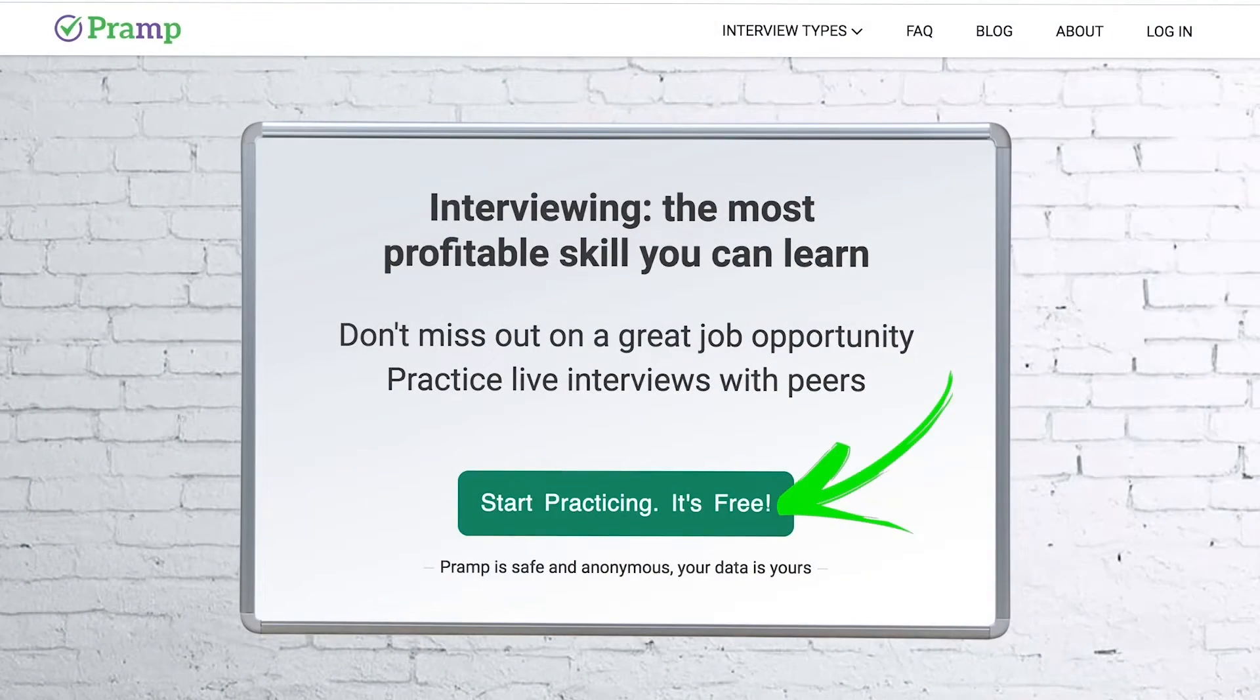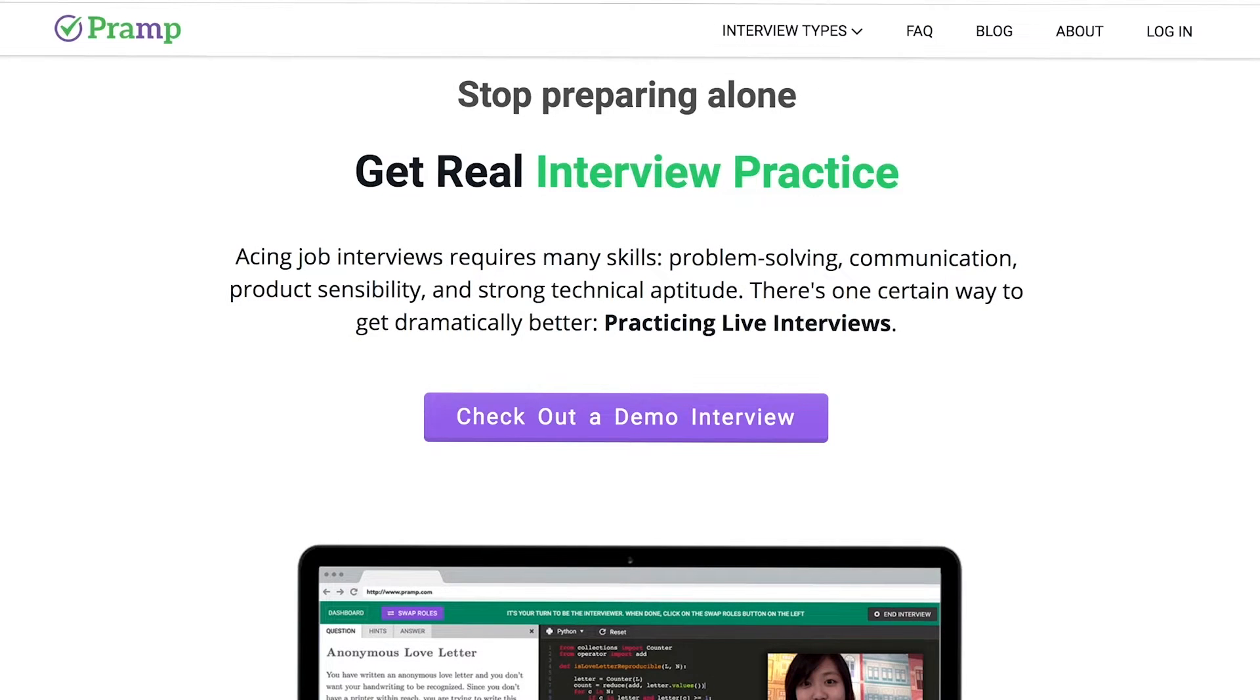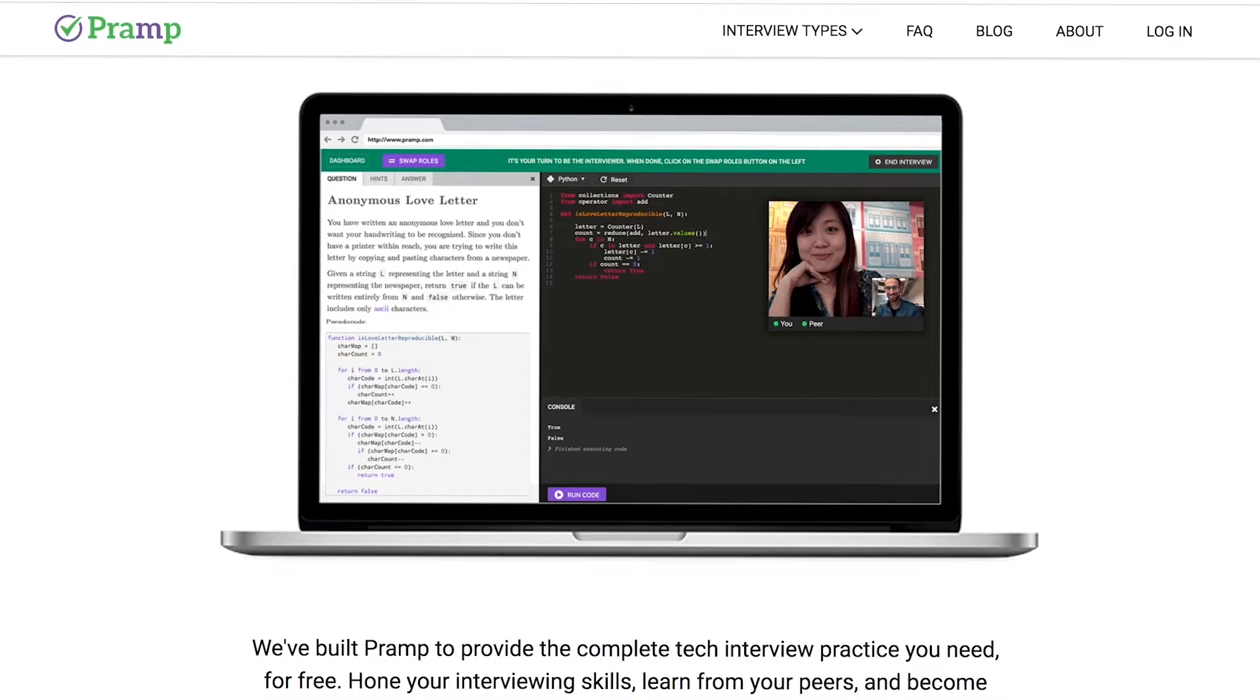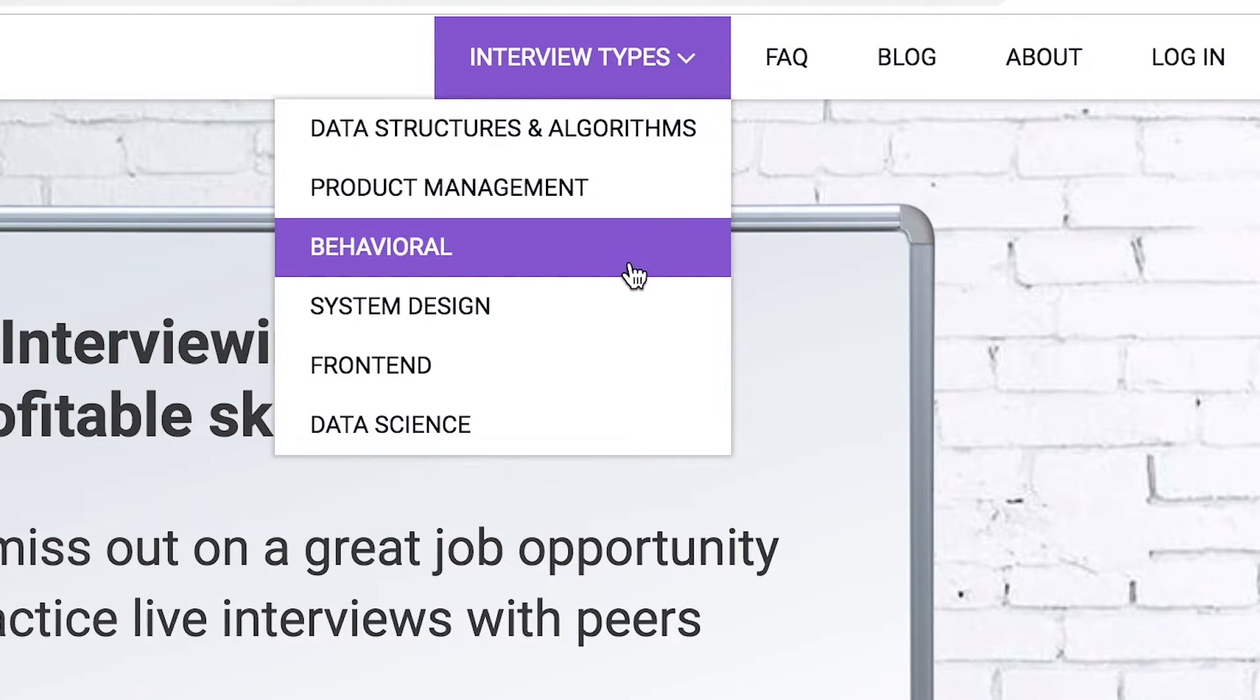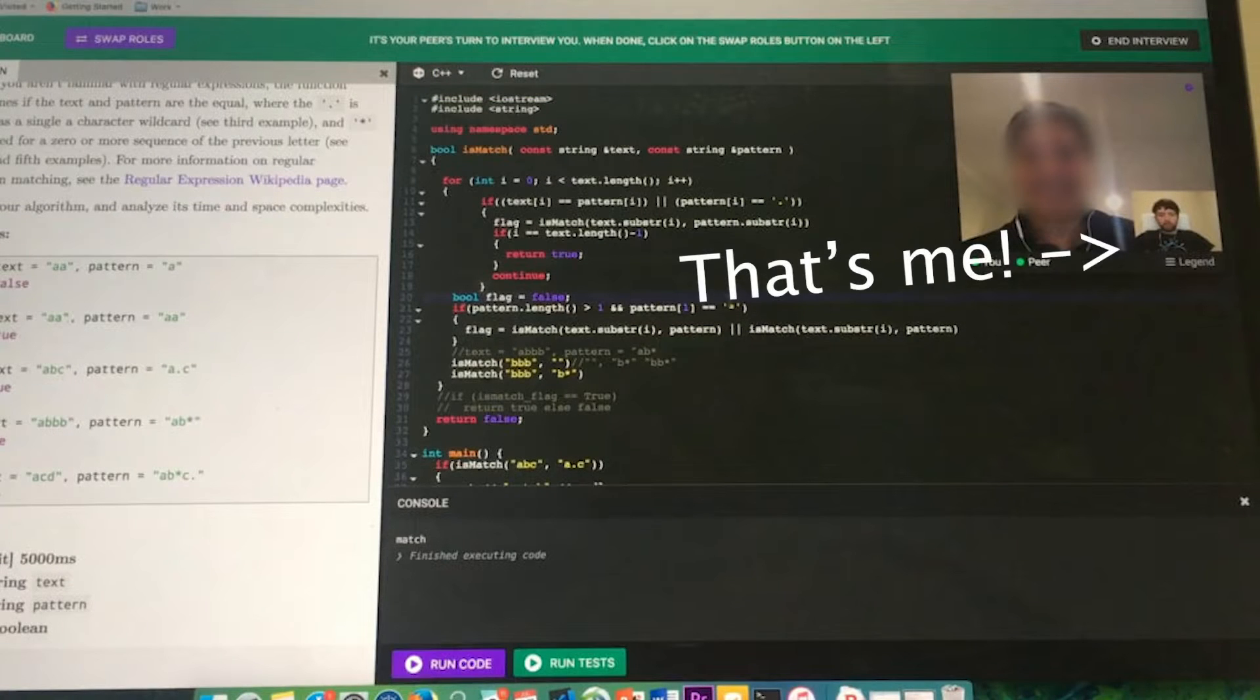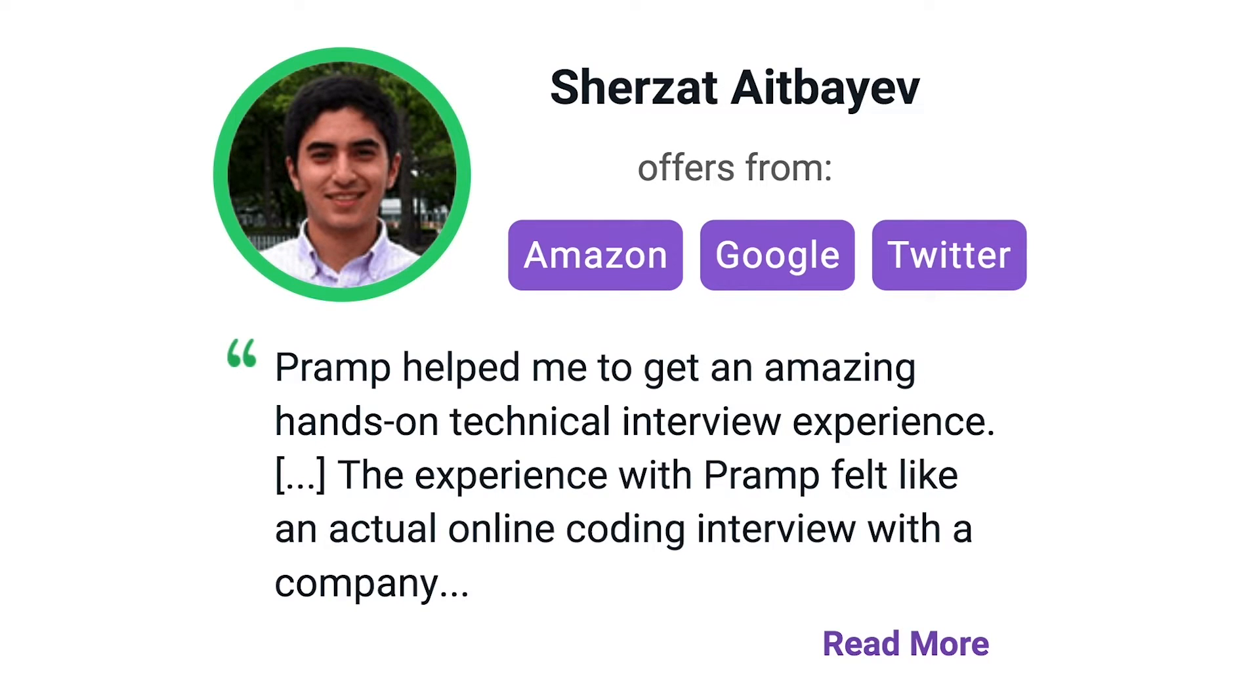Pramp is a free mock interview platform where you can develop your technical interviewing skills. Practice coding with live execution of all major programming languages to solve real interview questions. Interview types include data structures and algorithms, product management, behavioral interviews, system design, front-end, and data science. I've personally used this service to successfully crash course for a software engineering interview. Lots of people are having success getting positions at companies like Amazon, Google, Twitter, and more. Check it out. I'll leave a link for you guys in the description.